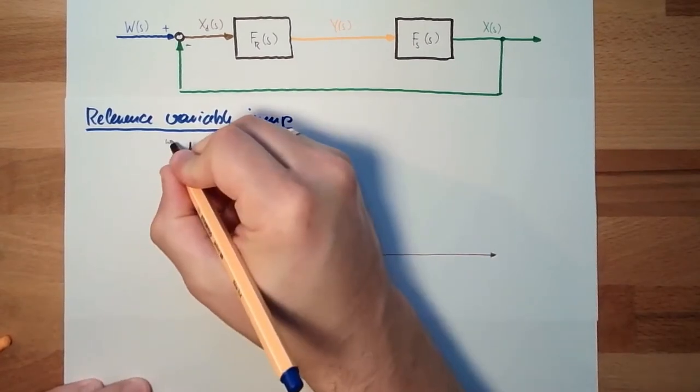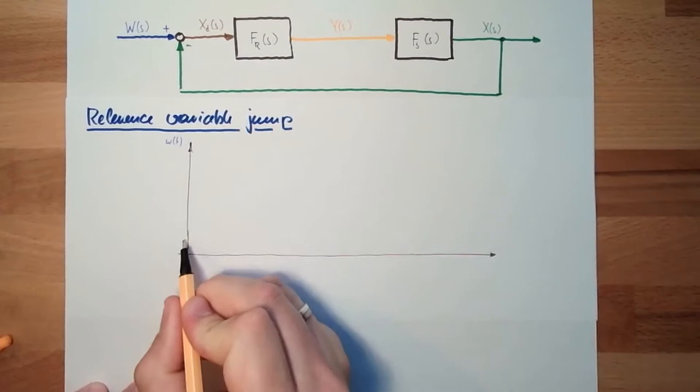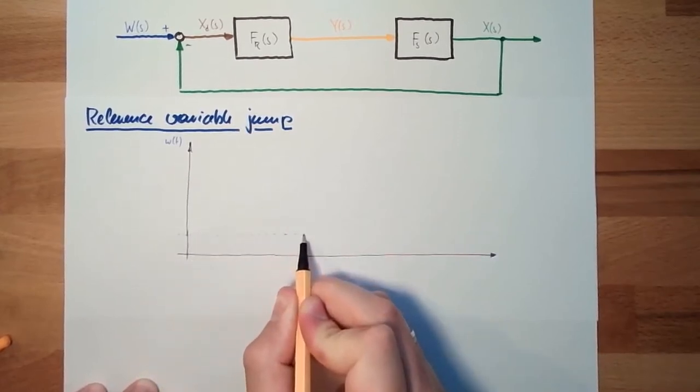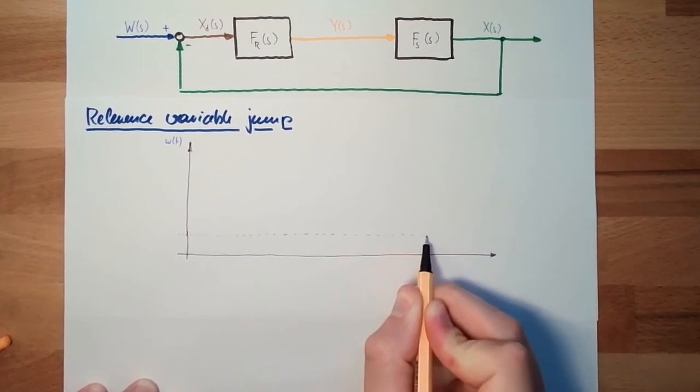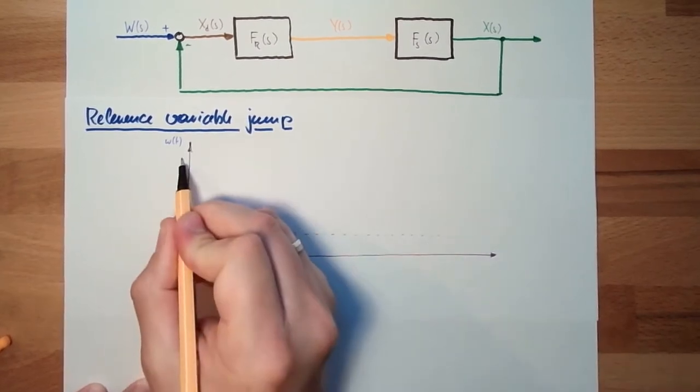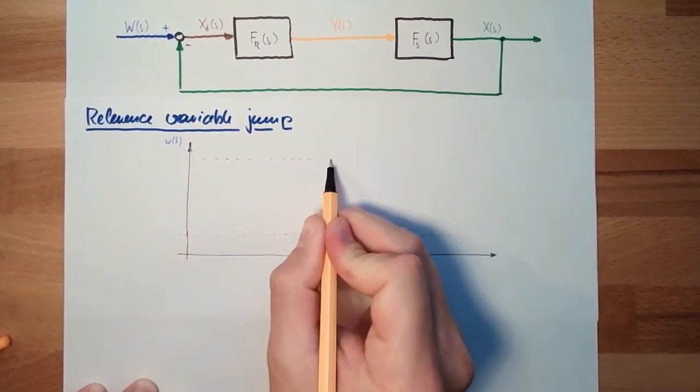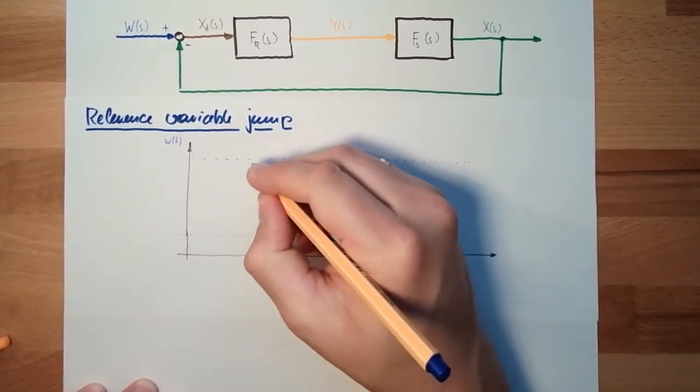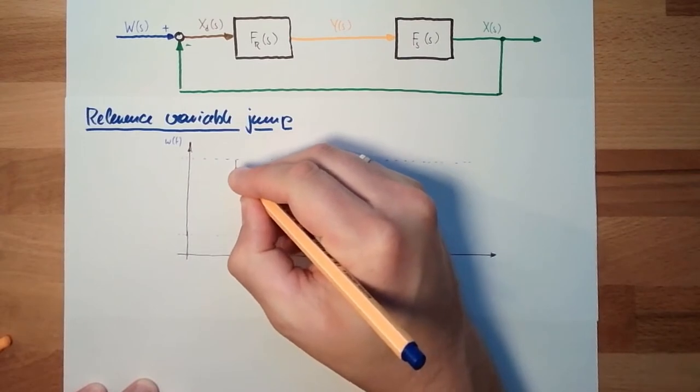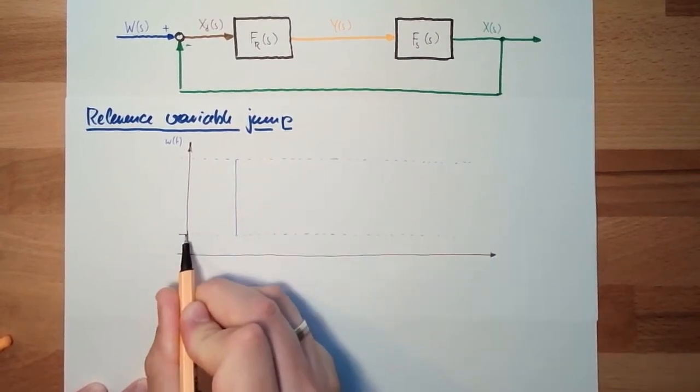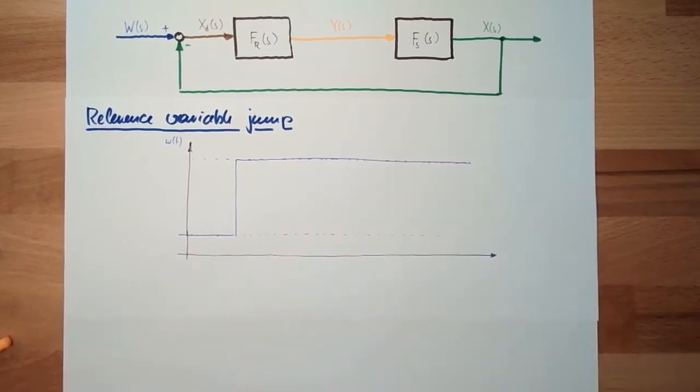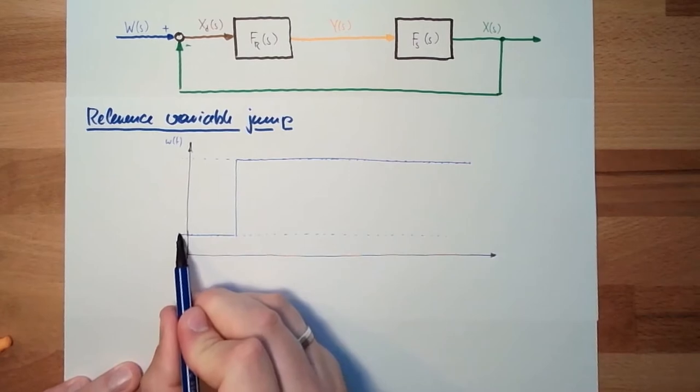So we will have here w from t, there is a start value, there is an end value, and in some point in time we do the jump. That's it. This is the signal w from t.